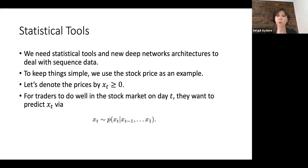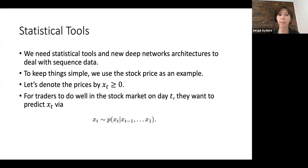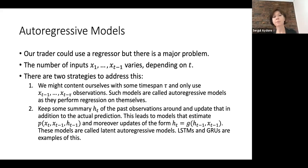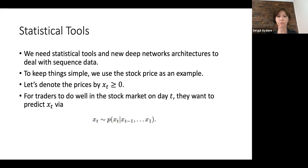Let's start with a stock price as an example. Let's denote the price by x_t, which is greater than zero. For traders to do well on day t, they want to predict the stock price x_t, so they want this probability of x_t given x_{t-1}, which is yesterday's price, x_{t-2}, the price from two days ago, and so on. A trader could use a regressor, but the problem is the number of inputs varies depending on t.